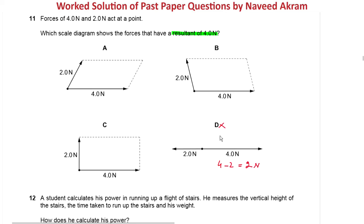Now we have to check options A, B, and C. It is stated in the question that it is a scale diagram. It means that the length of the vectors represent their magnitude.